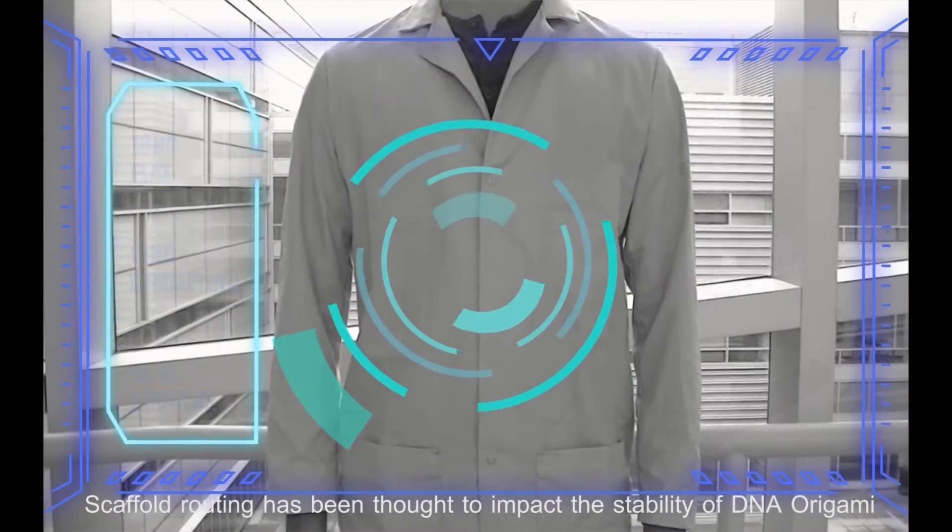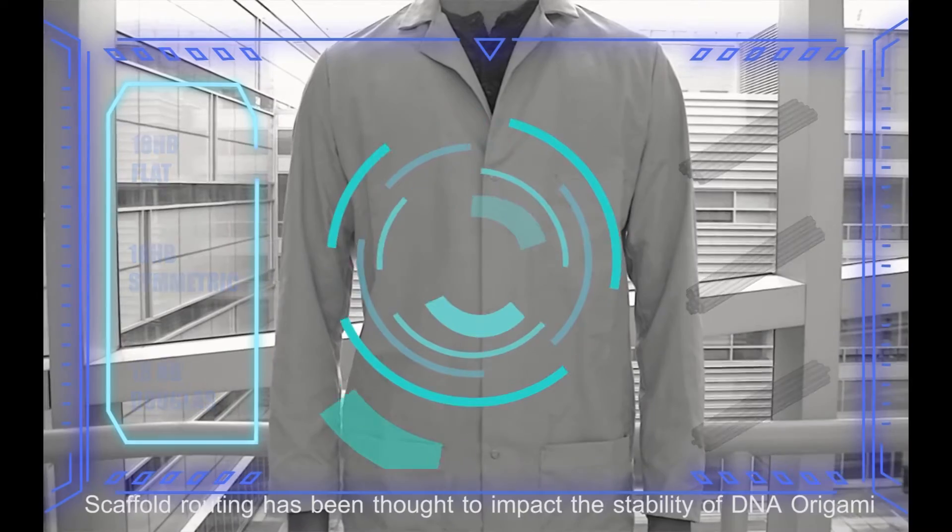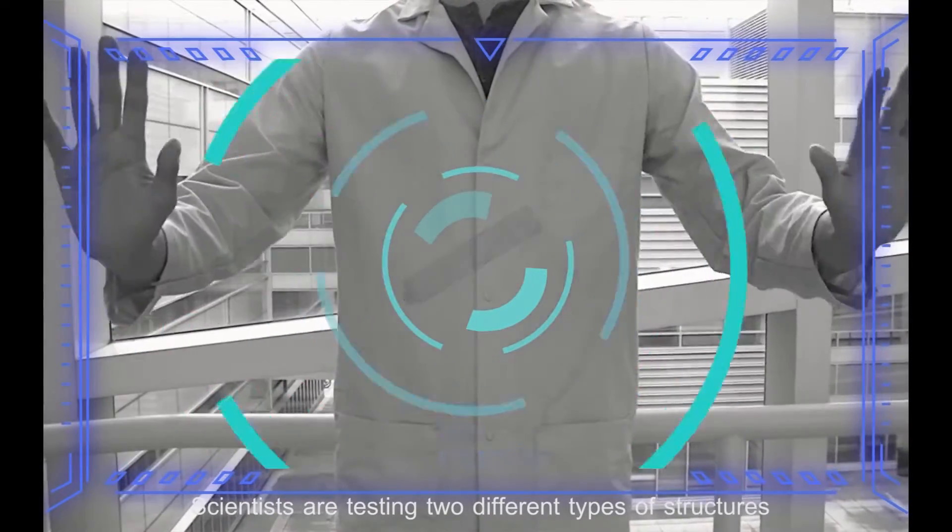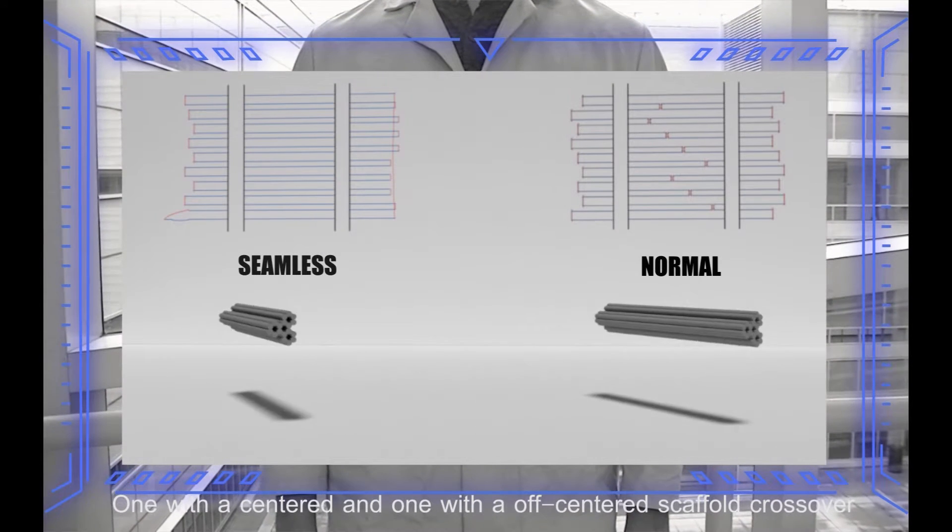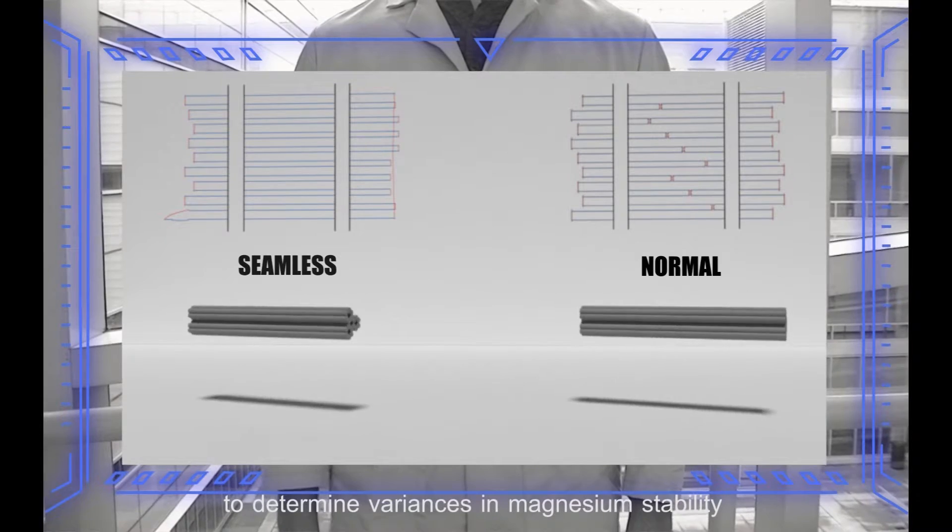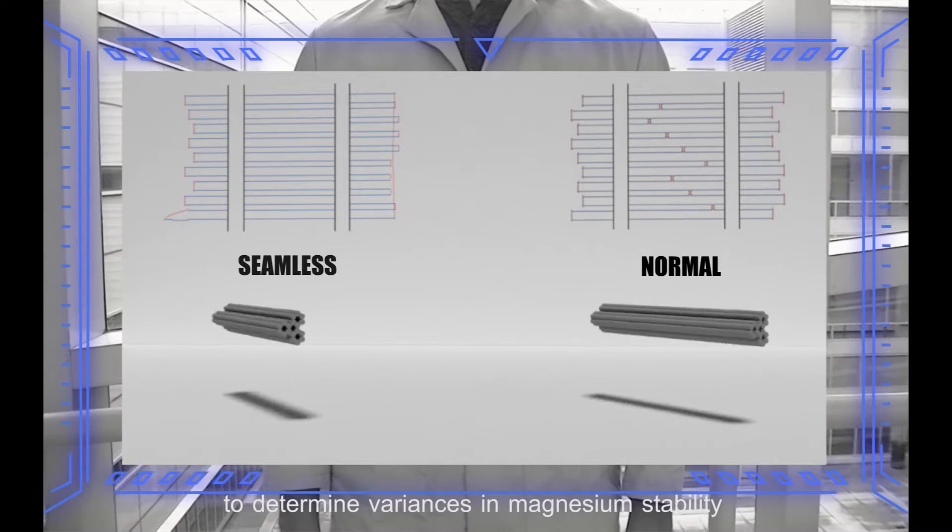Scaffold routing has been thought to impact the stability of DNA origami. Scientists are testing two different types of structures, one with a centered and one with an off-centered scaffold crossover, to determine variances in magnesium stability.